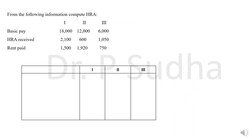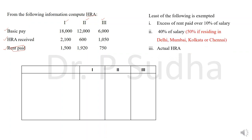This is the first question. From the following information, compute taxable HRA. Basic pay is given, HRA received is given, rent paid is given, under three different situations. In the question, rent paid is given, which means the employee is staying in rented accommodation. So we have to calculate the exempted amount by comparing three values. The first value is excess of rent paid over 10% of salary.